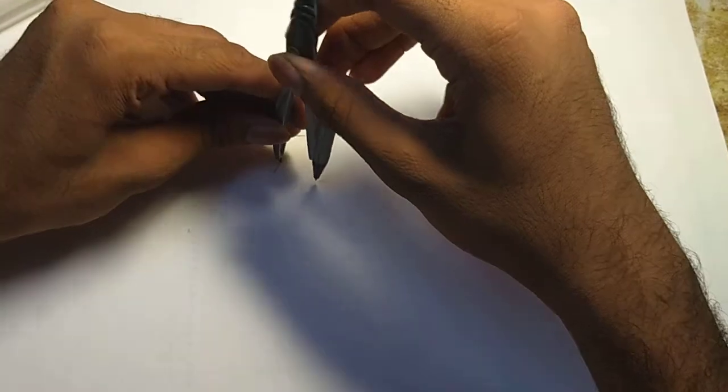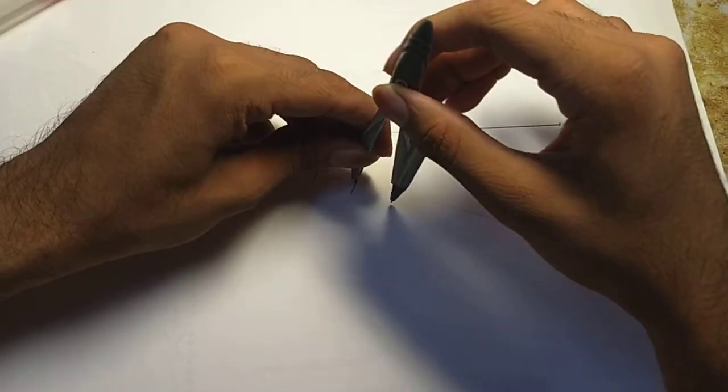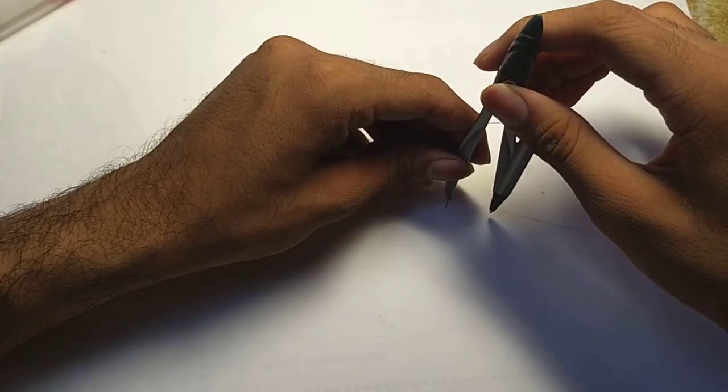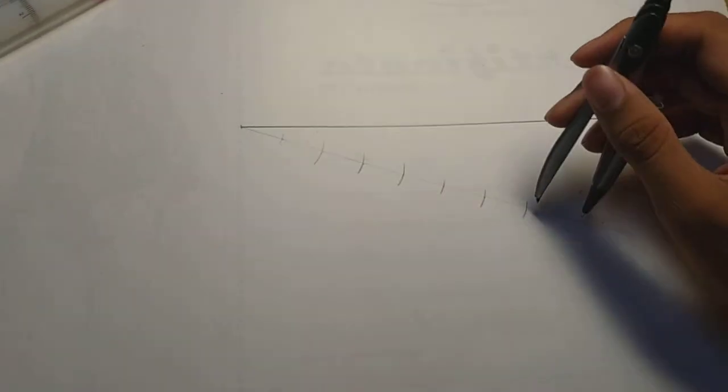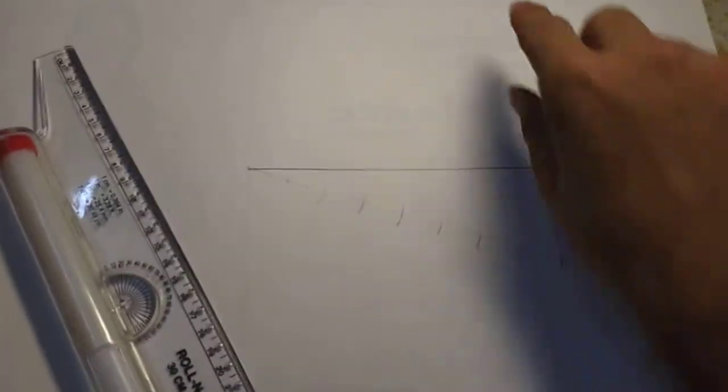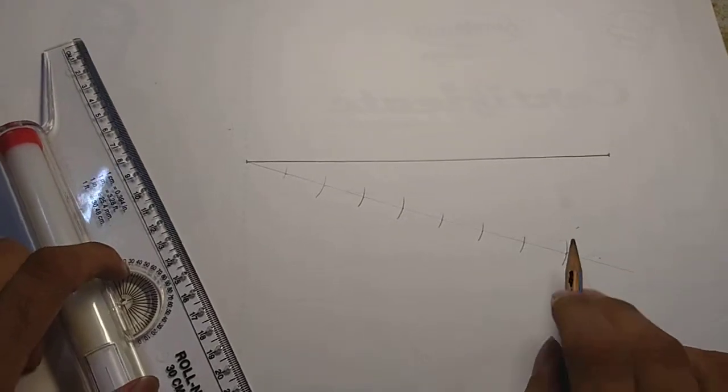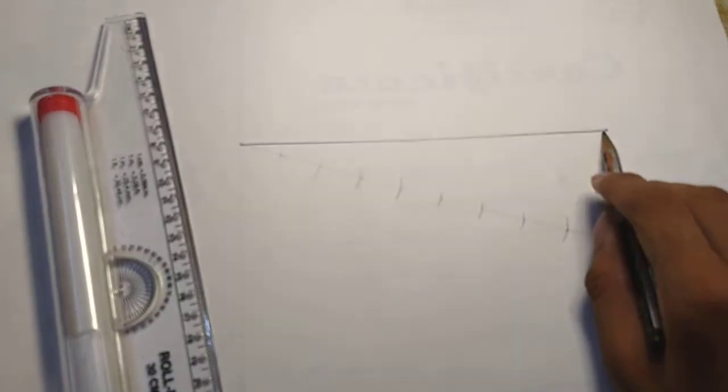One, two, three, four, five, six, seven. Okay, so I have divided into eight equal parts. Now connect this last point of the divided end to this point.